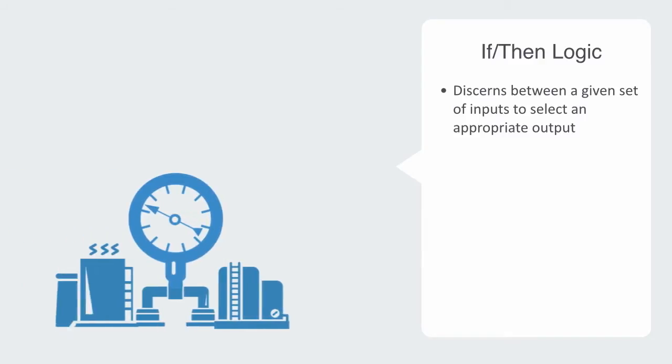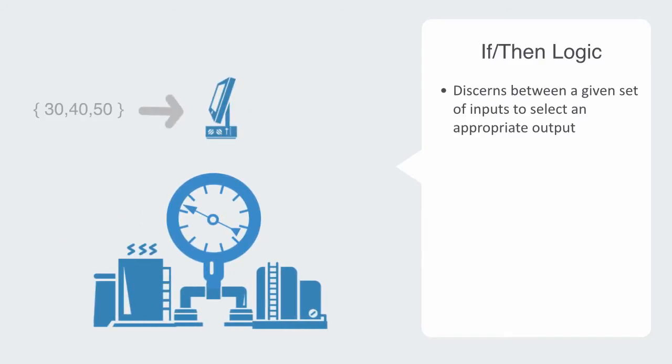More advanced algorithms are able to discern between a given set of inputs and use an if-then logic to select an appropriate output. For example, the control system within a chemical processing plant might be able to select from a set of output temperature values based upon a range of input temperature values in order to regulate a chemical process chamber.